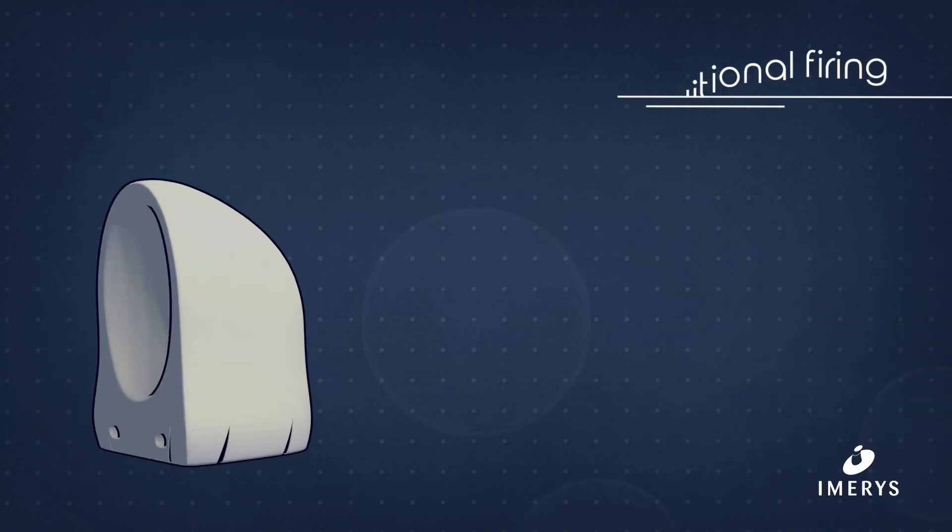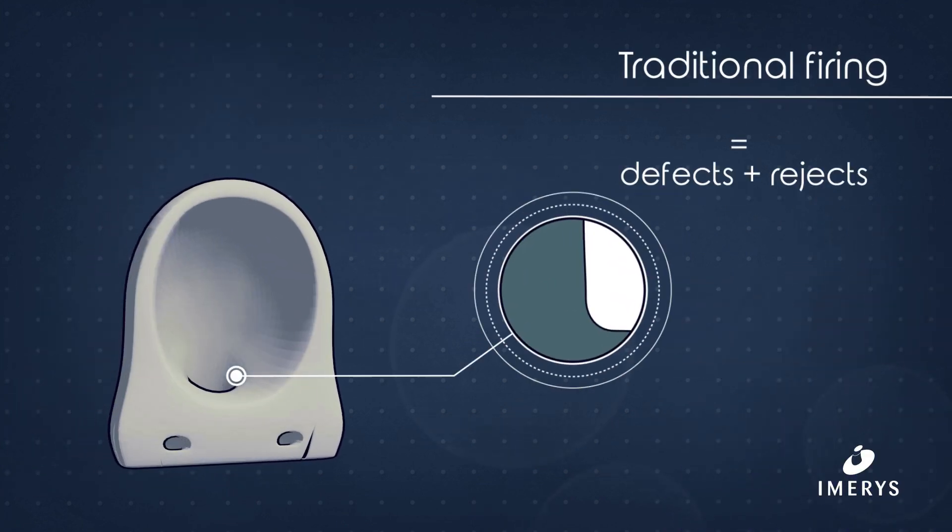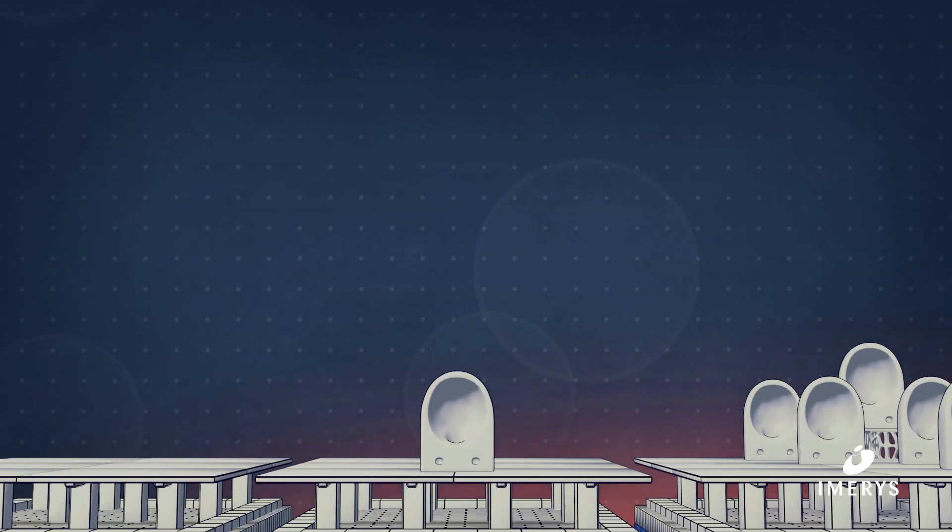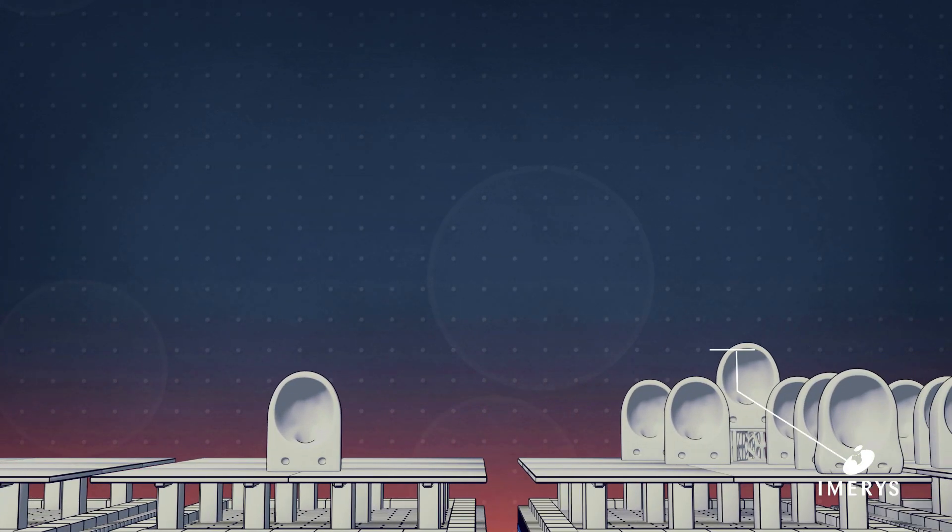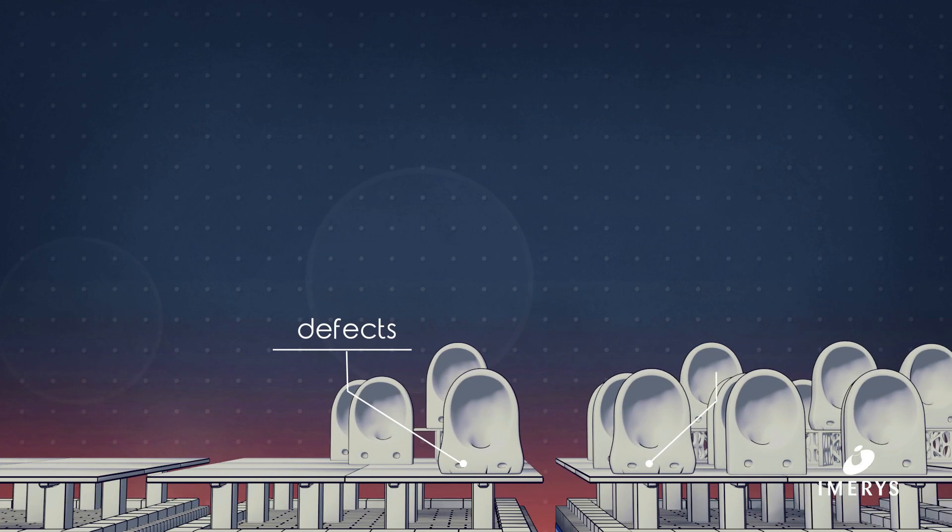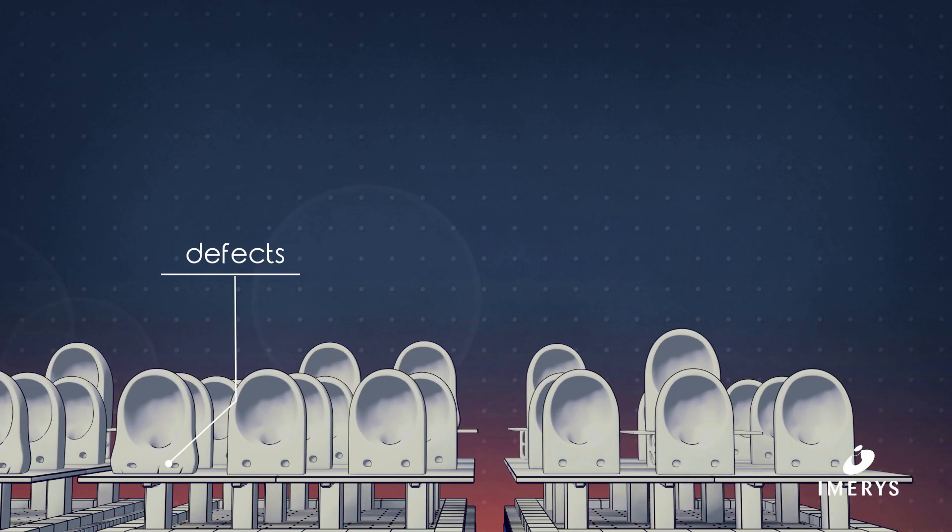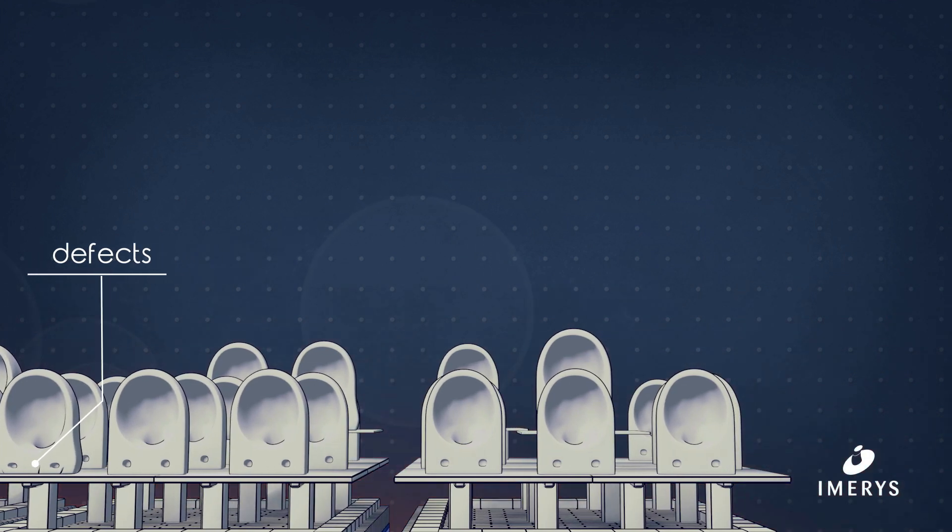Our conclusion is that the traditional firing process generates defects and rejects. Indeed, the extreme heat causes the ceramic piece to shrink, creating friction between the piece and the kiln furniture. This friction often results in flaking glaze and deformations on the pieces.